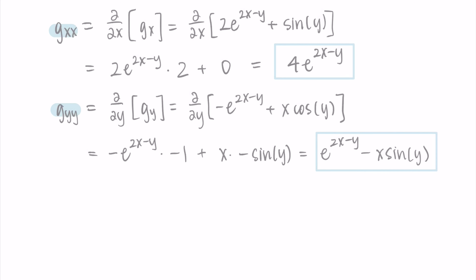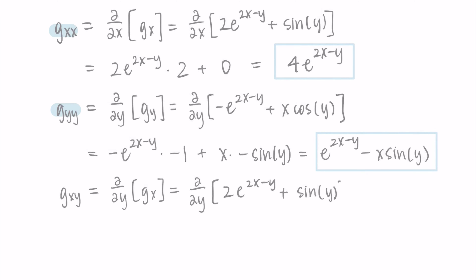Now we just have the mixed partial derivatives left. First, the derivative with respect to y of the partial derivative with respect to x: taking ∂/∂y of 2e^(2x - y) + sin(y). I get 2e^(2x - y) times negative 1 from the exponent derivative, then the derivative of sin(y) with respect to y is cos(y). Putting this together: -2e^(2x - y) + cos(y).